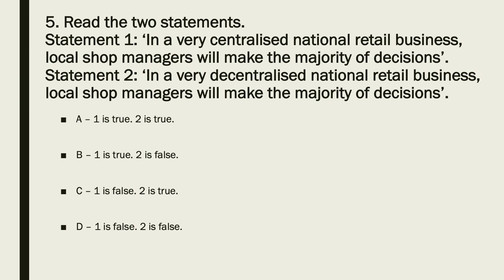Statement one is false — a very centralised national retail business means decisions are made at the top of the organisation, not at a local level, so statement one is false. Statement two is likely to be true, which means the answer is C.